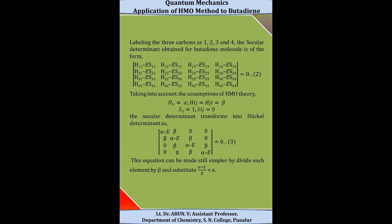We write the secular determinant of the butadiene molecule, which has the form: (H11 − E·S11), (H12 − E·S12), (H13 − E·S13), (H14 − E·S14), then the second row, third row, and fourth row. By applying the assumptions of Hückel molecular orbital theory — that Hii = alpha, Hij = beta for adjacent atoms, Sii = 1, and Sij = 0 — the secular determinant transforms into the Hückel determinant.